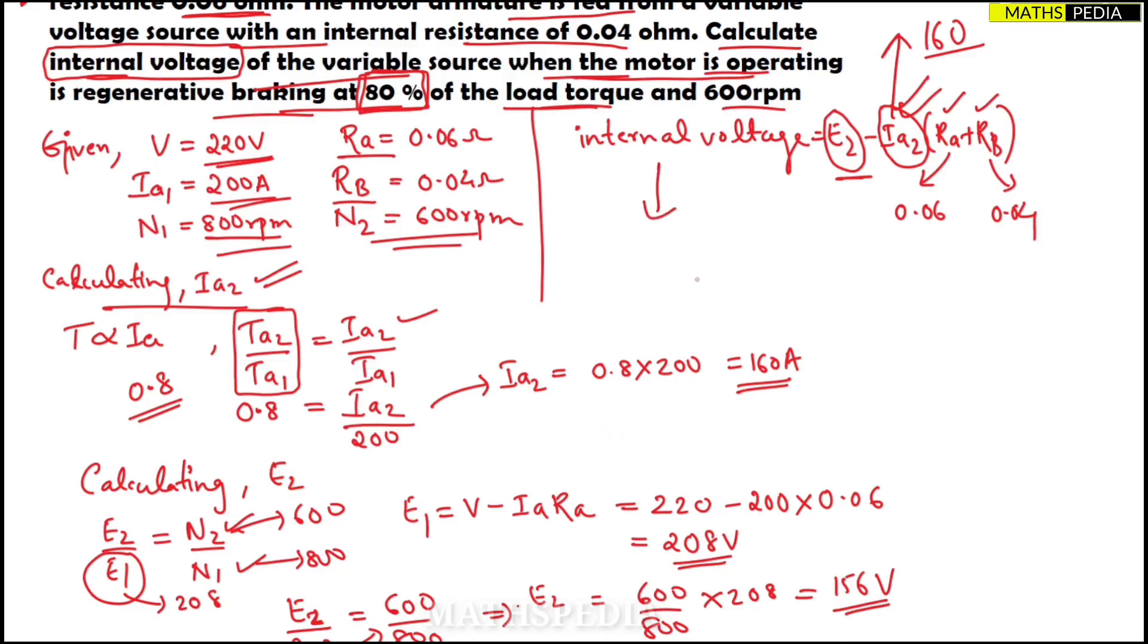The internal voltage = E2 - Ia2(Ra + Rb) = 156 - 160(0.06 + 0.04) which will give me the value as 140 volts.